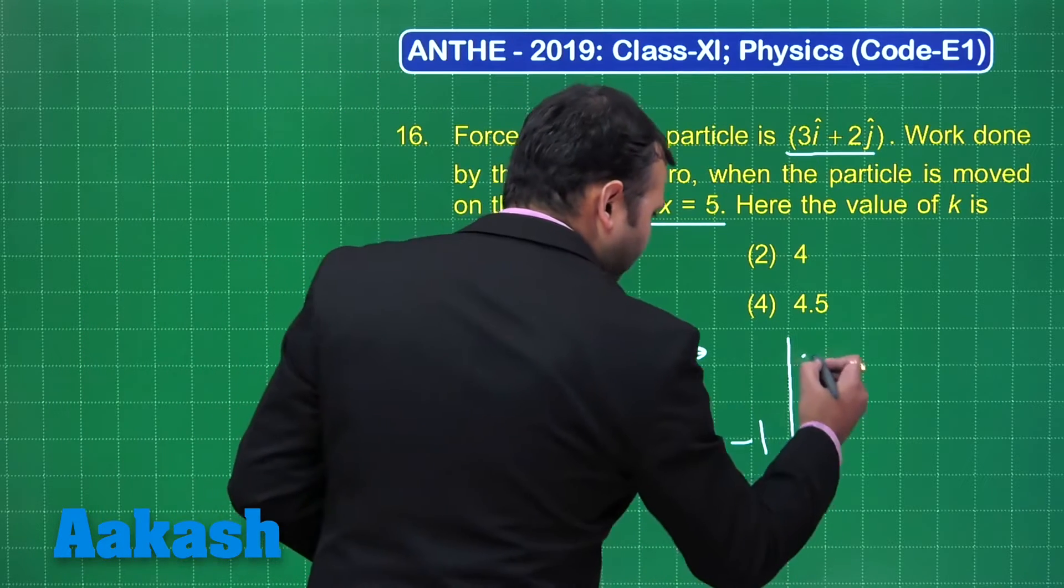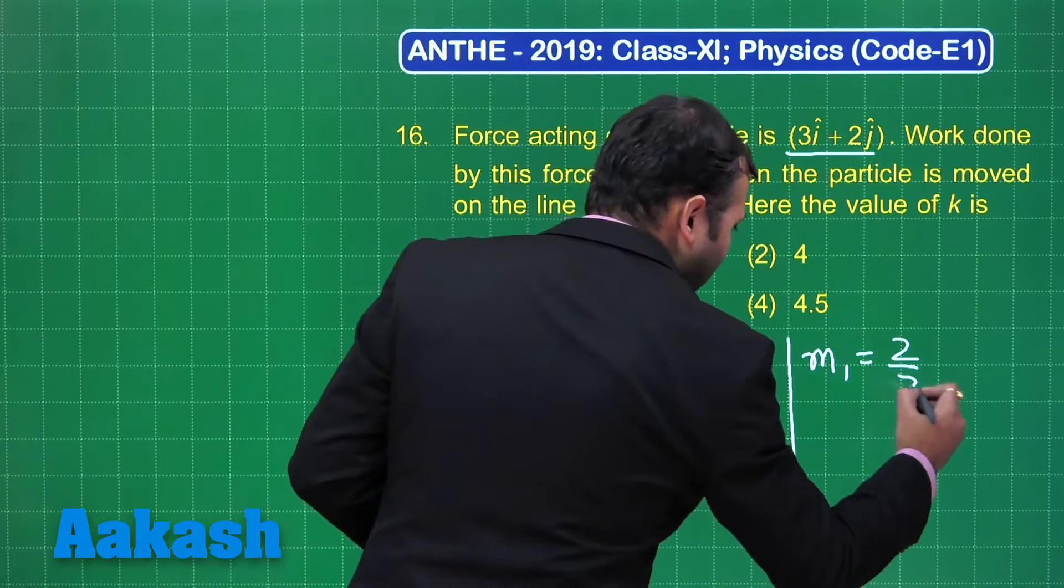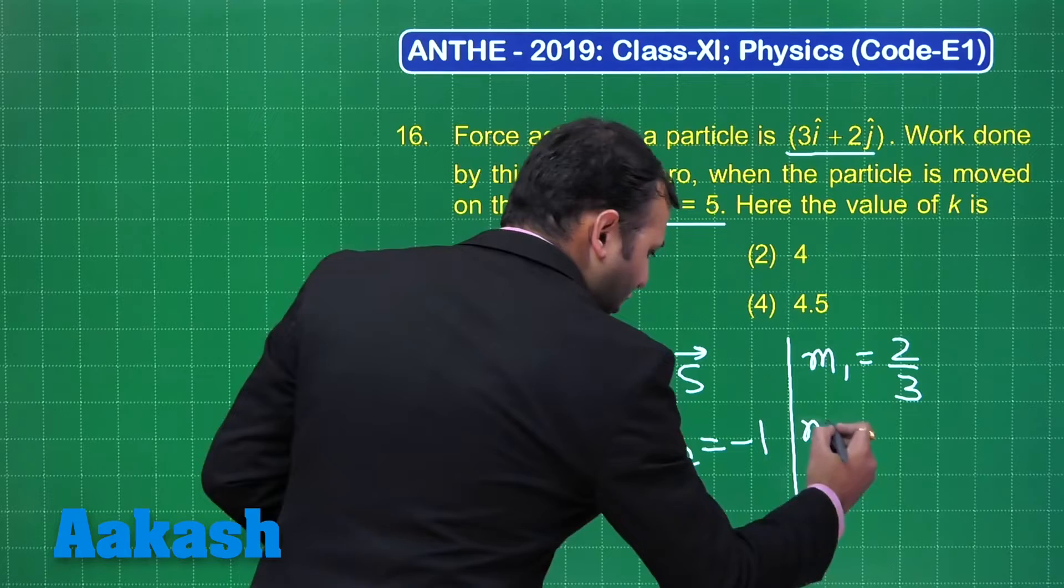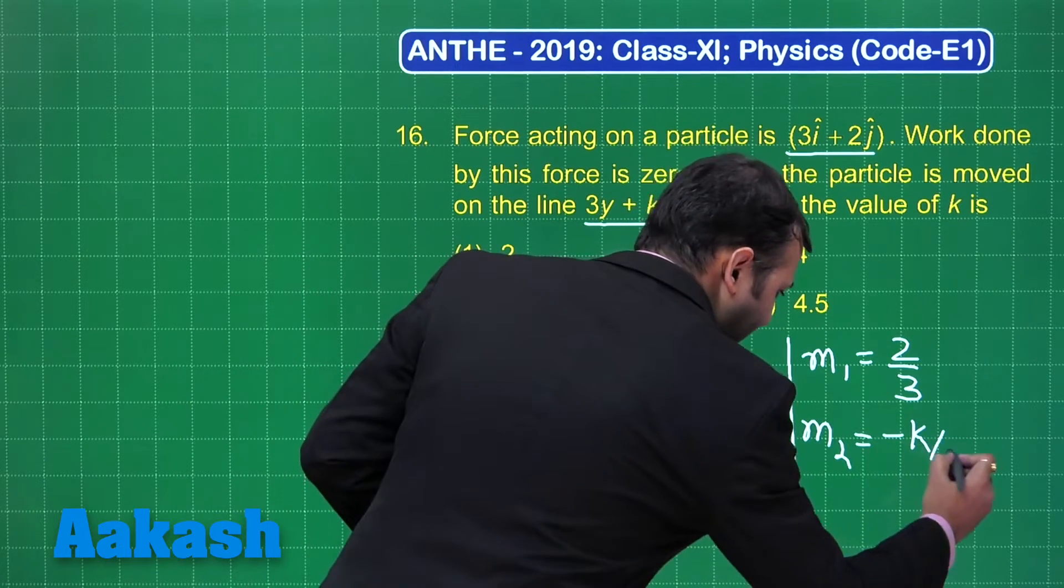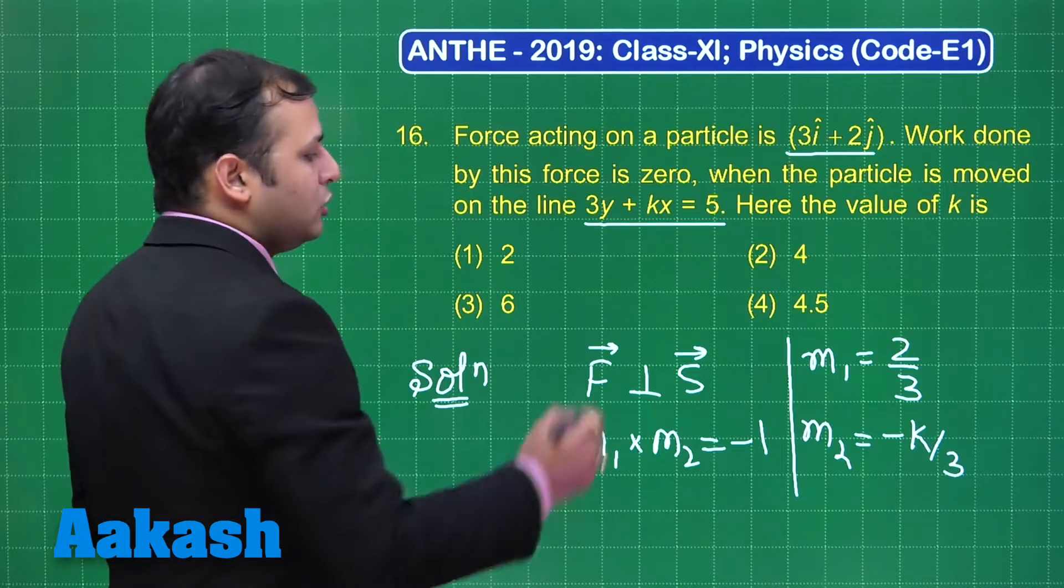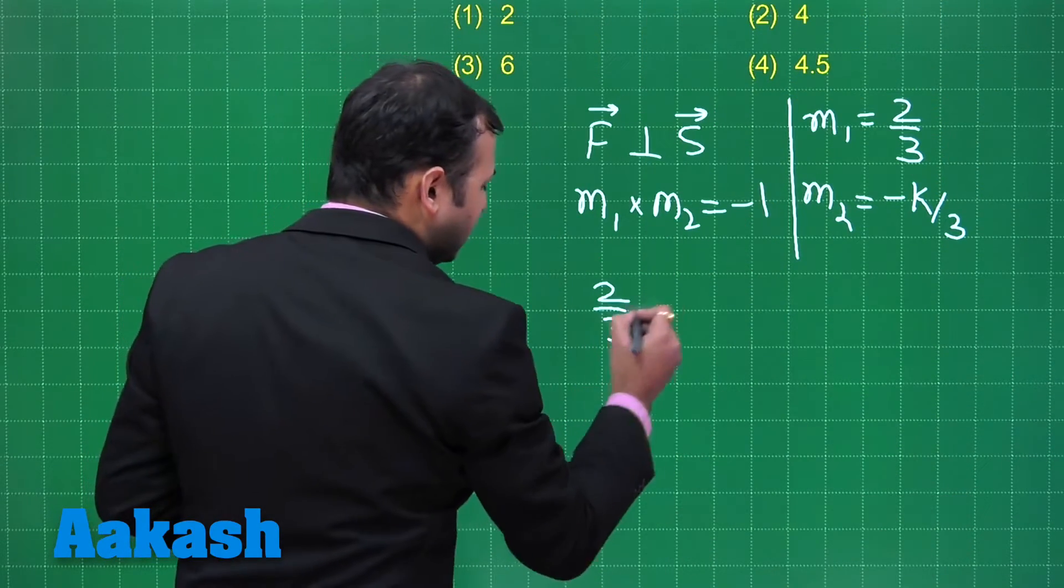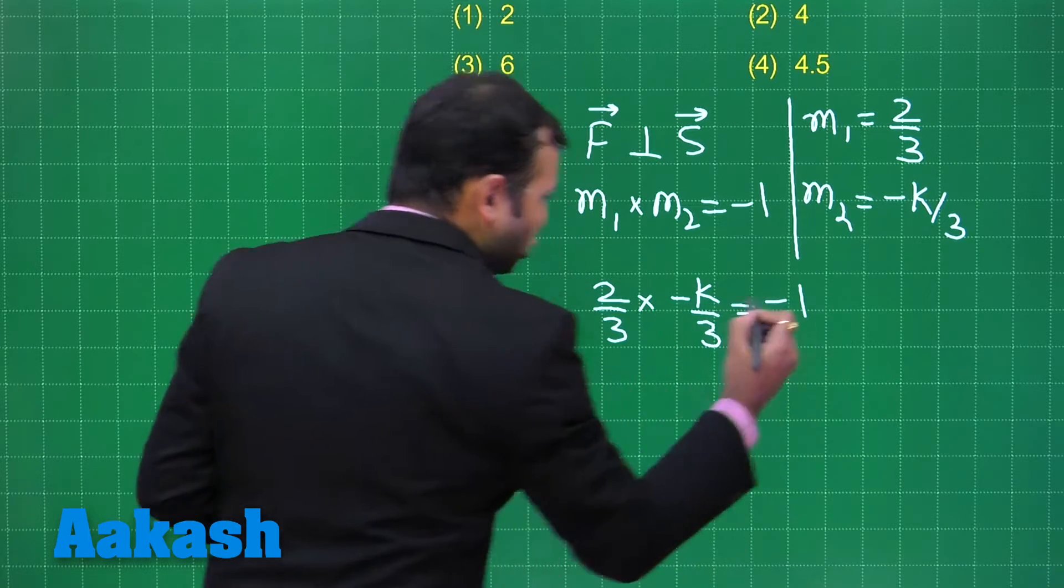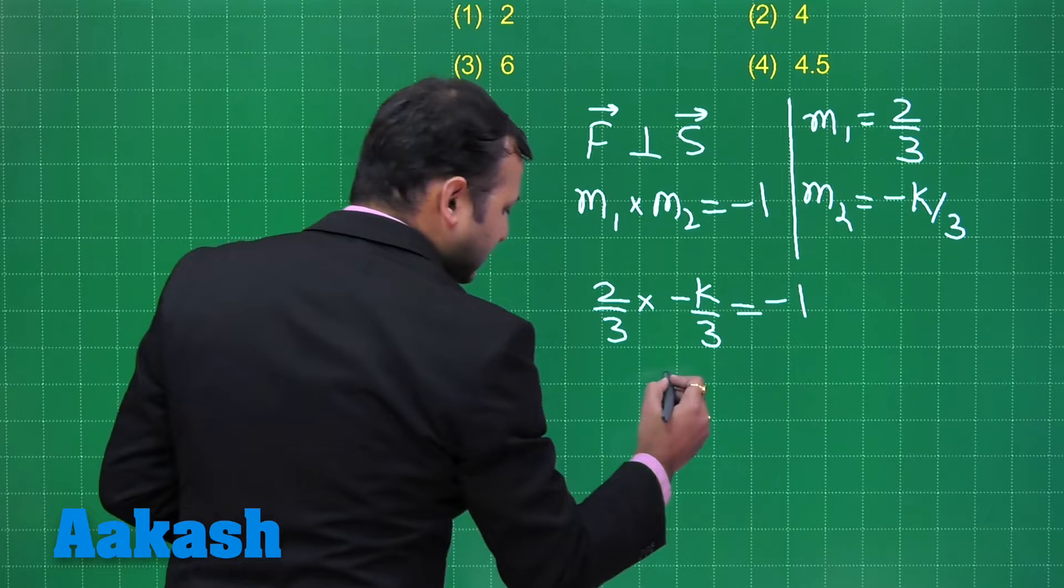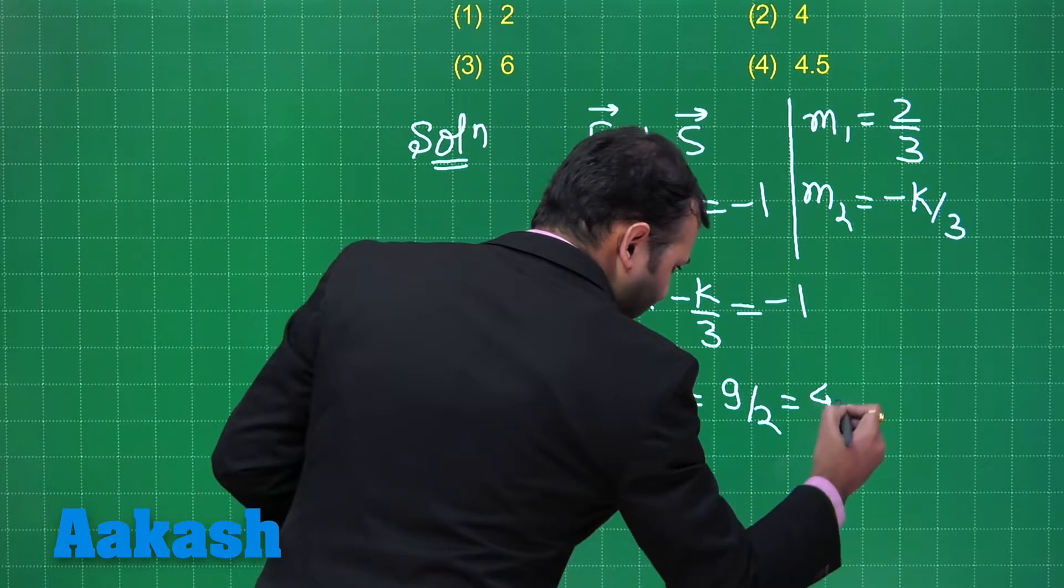Now let's talk about the value of m1. The slope here would be 2/3, whereas m2 would be -k/3 from this equation. Just multiply both of these and you get (2/3) × (-k/3), and by property they should be -1. Solving this you get k as 9/2, that would be 4.5.